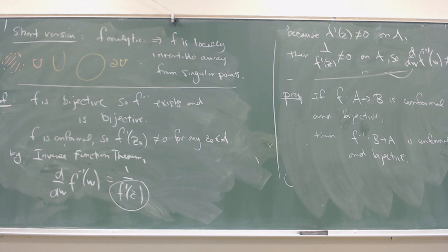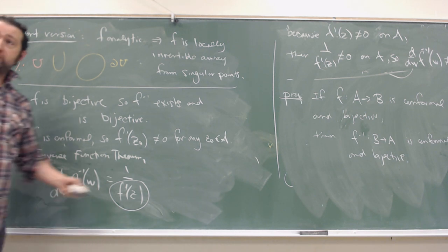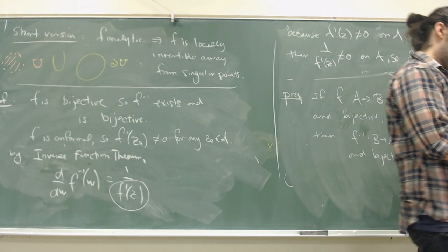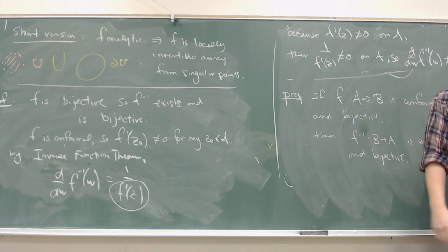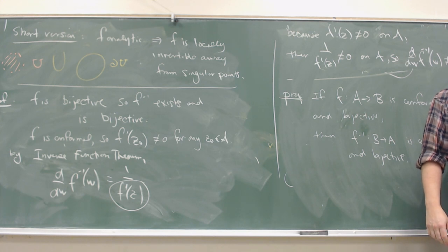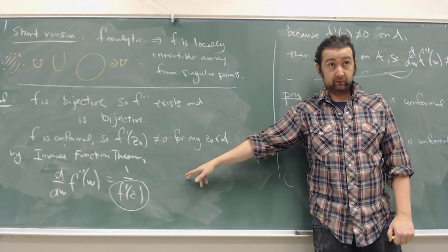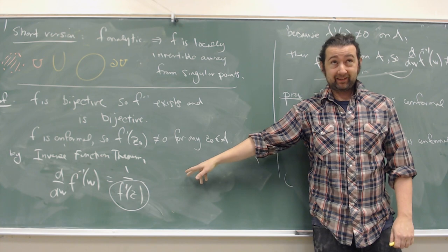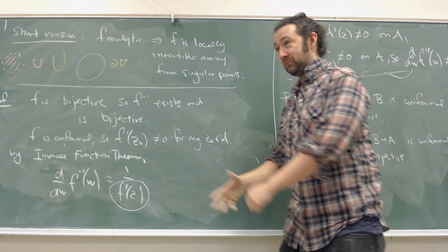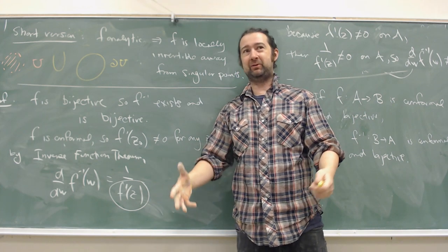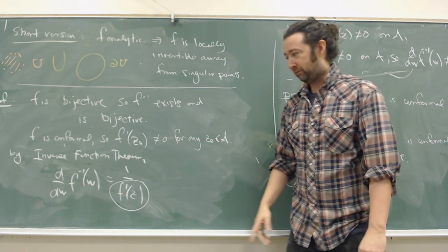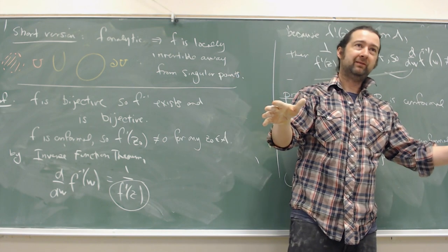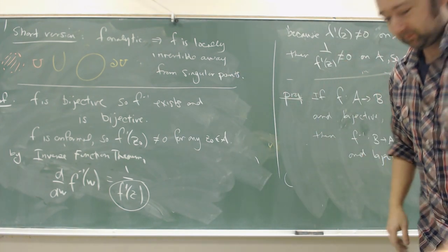All analytic functions are conformal, locally, except for an isolated number of points. This is what we're trying to build — the fact that analytic functions are all intrinsically conformal. We're revealing that the family of analytic functions, except for a few places where they happen to peak, are conformal everywhere.